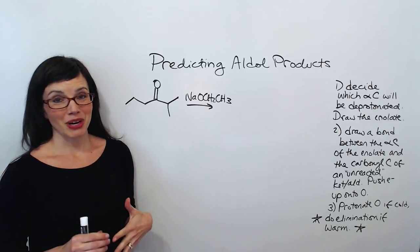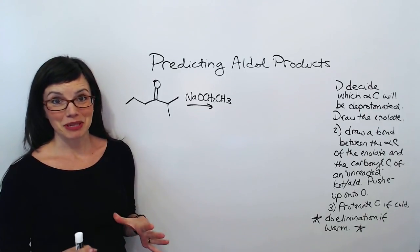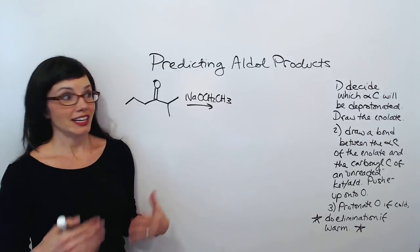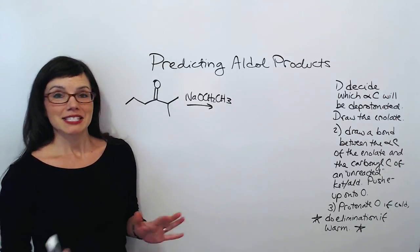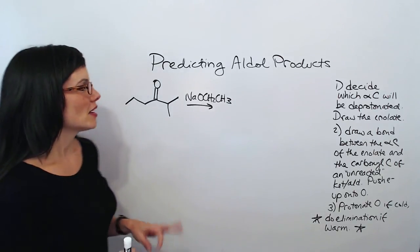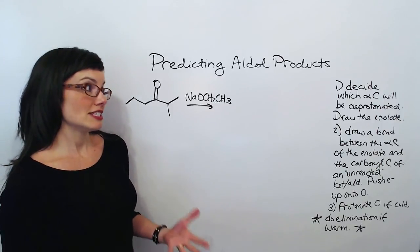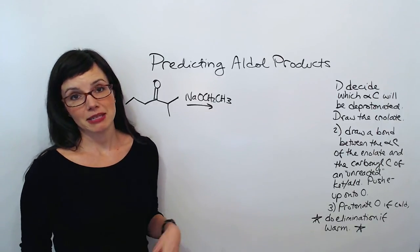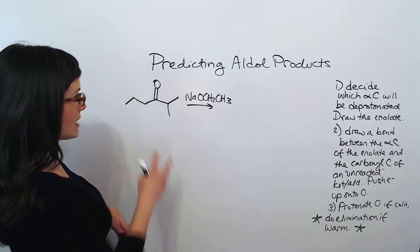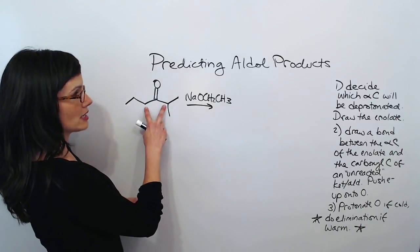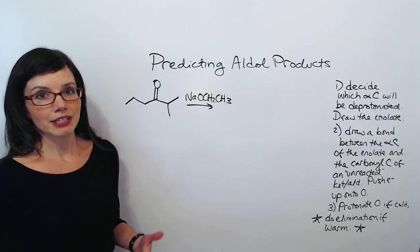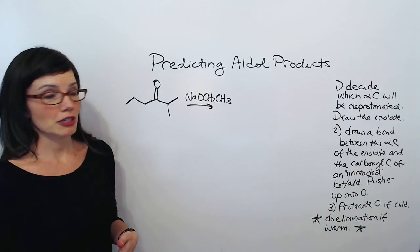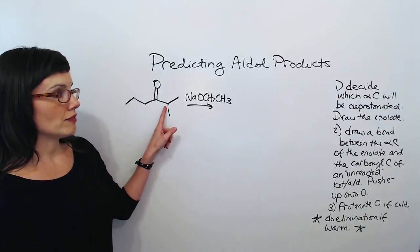When I'm predicting products, I want to dumb things down as much as possible so that there's very little thought and actually very little drawing. So let me show you how that works. My first step is to decide which alpha carbon is going to be deprotonated. In this case, I've got two alpha carbons. And since I've got an ethoxide base, I know I'm going to choose the more substituted one. So this is going to be my alpha carbon.